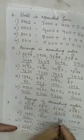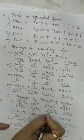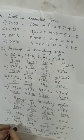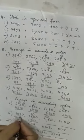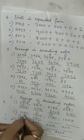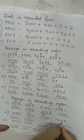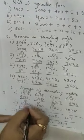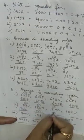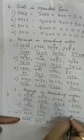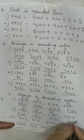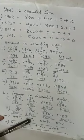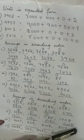Then comes the hundreds place comparison: here is 1 and here is 0. So 1080 will come in the second position. In the tens place we have 8 and 0 — 8 is greater than 0, so 1080 comes third and lastly 1008. So the order is: 1800 is greater than 1080 is greater than 1008.